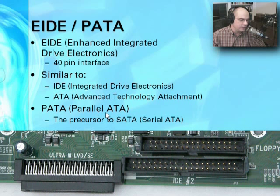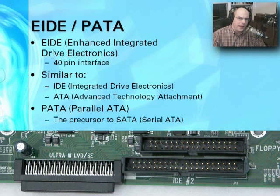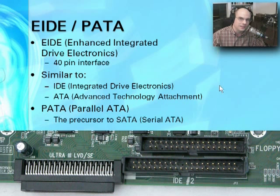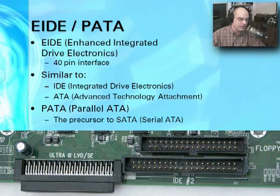Today we call those ATA connections parallel ATA connections — they used to just be called ATA drives, but now we call them PATA drives. That's because there's a newer type of drive configuration that uses a serial connection: a SATA drive. So if somebody says they're looking for a PATA drive, you'll know they're looking for an ATA drive. Serial ATA looks and plugs in very differently, so the two are not interchangeable, even though the ATA specification has some things in common between them.